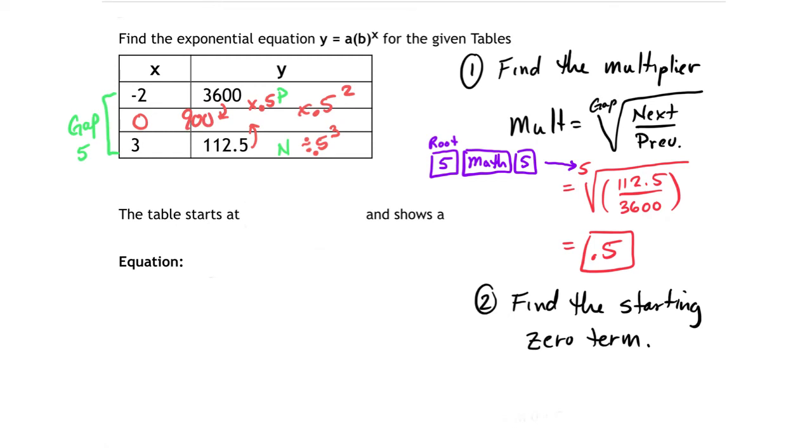Now that I have that, I'm basically done with this equation. So for this problem, what we have to do next is we have to say this thing starts at 900. What does the multiplier tell us? When you multiply by 0.5, you're actually reducing it by 50%. That's a 50% decrease.